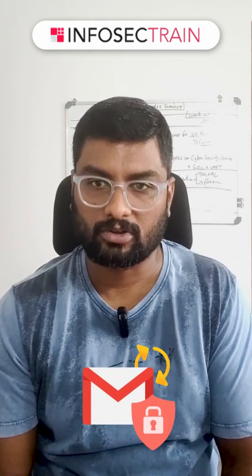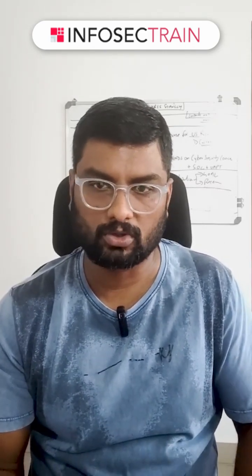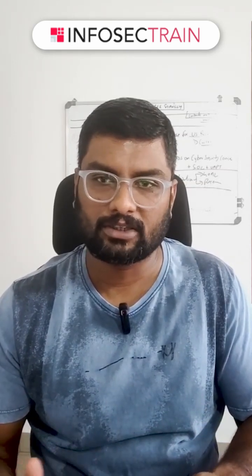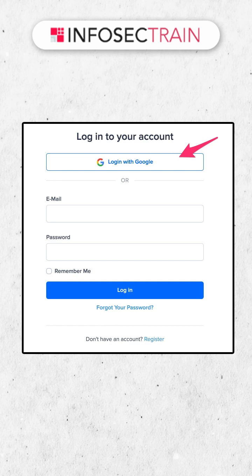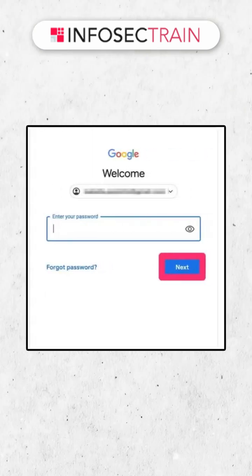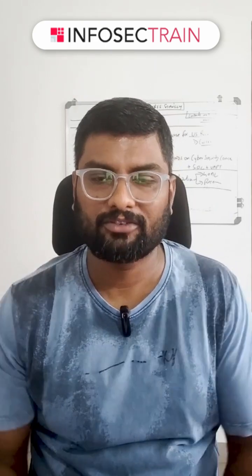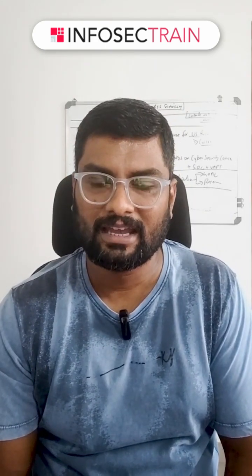The best real-world use case of federation is when you use your Gmail credentials to log into booking.com. Booking.com is not owned by Gmail. When you open booking.com, select hotel dates, and move to payment, they give you two options: either log in with your registered booking.com account, or log in with your Gmail ID. When you select 'login with Gmail ID,' it redirects you to the Gmail portal where you enter your credentials. Gmail then provides the necessary information to booking.com, and through that you're able to log in.